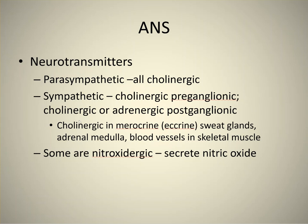That adrenergic case is usually what happens. The cholinergic postganglionic neurons in the sympathetic division are found only in sweat glands, the adrenal medulla, and blood vessels. Some sympathetic postganglionic axons actually secrete nitric oxide, so they are called nitrergic. In the next part of this PowerPoint starting with slide 15, we'll talk about receptor types for cholinergic and adrenergic synapses.